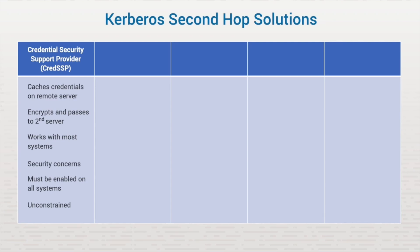If you're running on a Windows Active Directory network using Kerberos, you have options to configure Kerberos constrained delegation to pass credentials to the second hop. Enabling Kerberos delegation provides more security than CredSSP, but can be more complicated to set up.